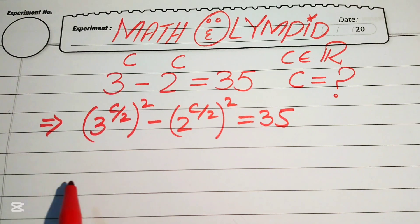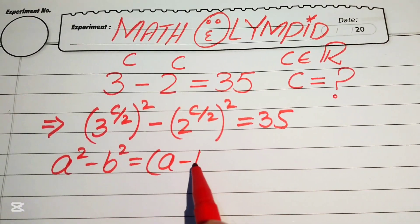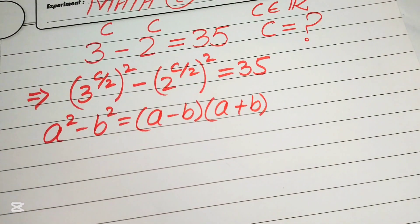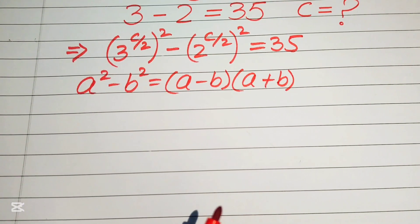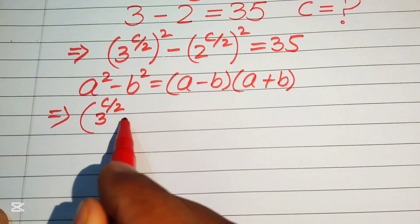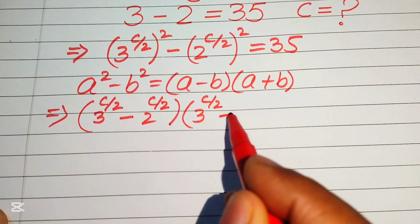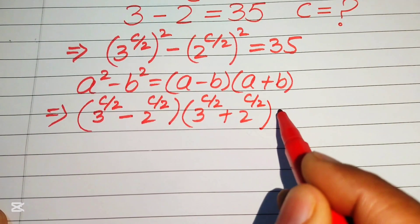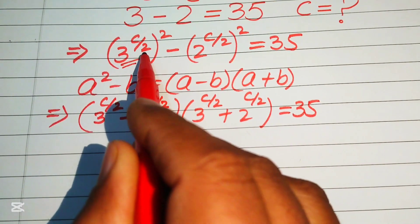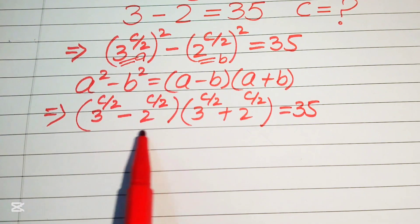Now we need the algebraic formula: a squared minus b squared equals (a minus b)(a plus b). According to this formula, we rewrite the equation as (3^(c/2) minus 2^(c/2)) times (3^(c/2) plus 2^(c/2)) equals 35, where 3^(c/2) is our a and 2^(c/2) is our b.